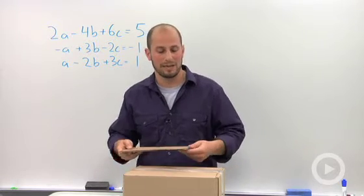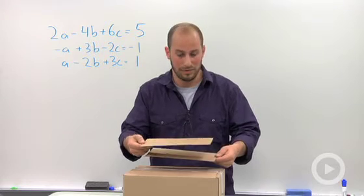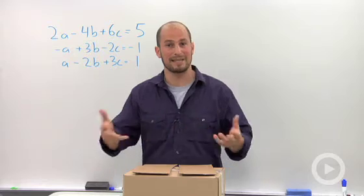Again, if this bottom surface is a plane, we can have parallel planes, in which case we have no intersection for all three. Or they could all be the same plane altogether, in which case they intersect everywhere.